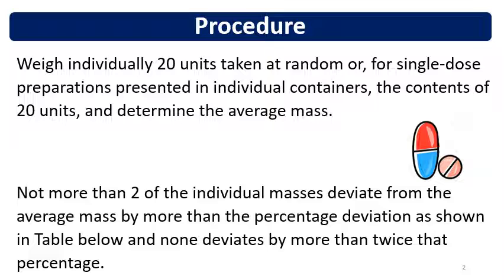Uniformity of mass or weight variation test is performed as an in-process test and also on the finished formulation. This test is performed for tablets, capsules, soft gelatin capsules, and also on single unit dose preparations like sachets filled with granules or sachets filled with powder.